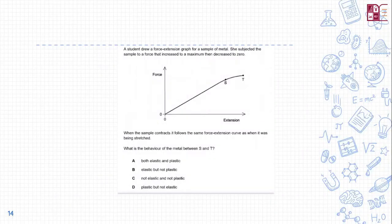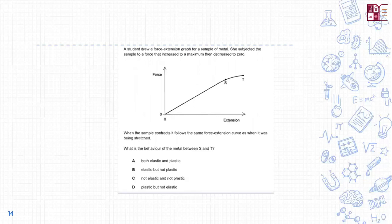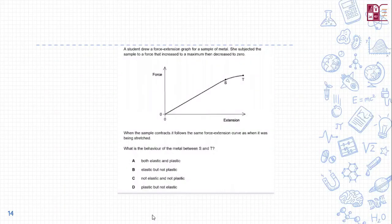Question 3: A student viewed a force-extension graph for a sample of metal. She subjected the sample to a force that increased to a maximum then decreased to zero. The sample follows the same force-extension curve when contracting as when it was being stretched. The behavior between points S and T is elastic but not plastic — the extension increased with force but not by the same constant, and the sample did not break.